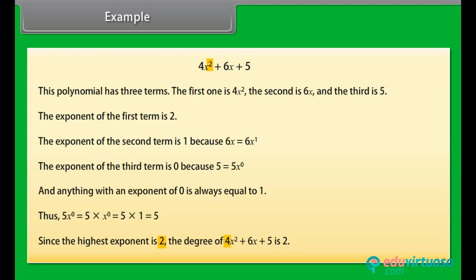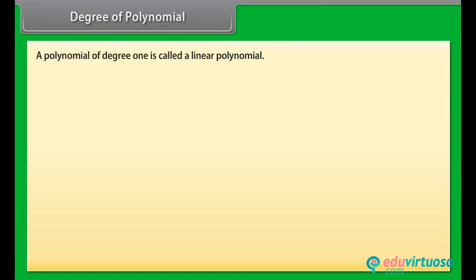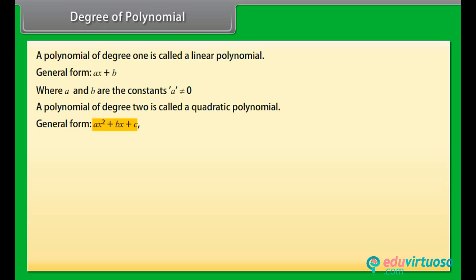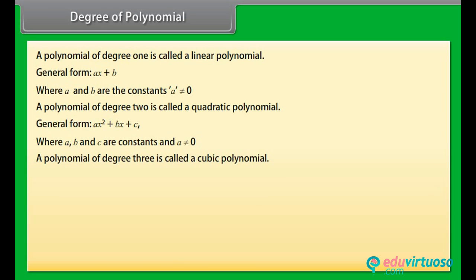Since the highest exponent is 2, the degree of 4x squared plus 6x plus 5 is 2. A polynomial of degree 1 is called a linear polynomial; its general form is ax plus b, where a and b are constants and a is not equal to 0. A polynomial of degree 2 is called a quadratic polynomial; its general form is ax squared plus bx plus c, where a, b, and c are constants and a is not equal to 0.